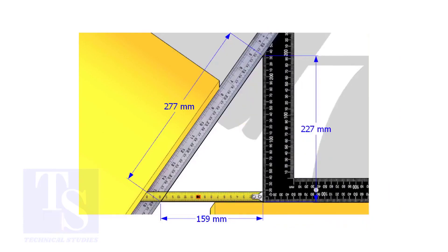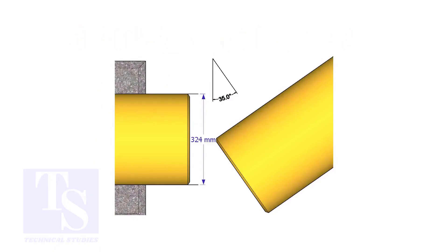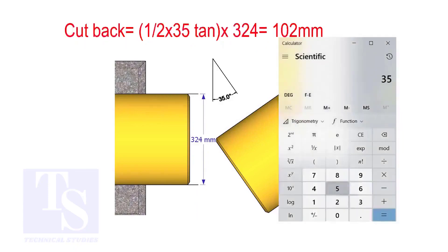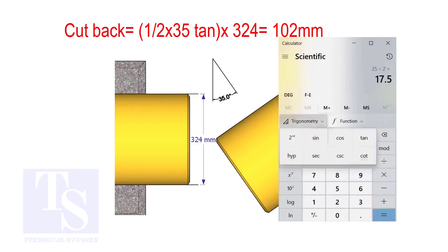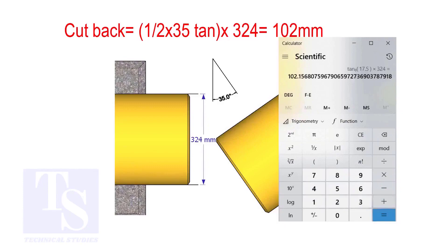How to calculate the cutback of a single cut miter: when it is a single cut, the cutback is half-degree tangent multiplied by the OD of the pipe. The answer is 102 millimeters.